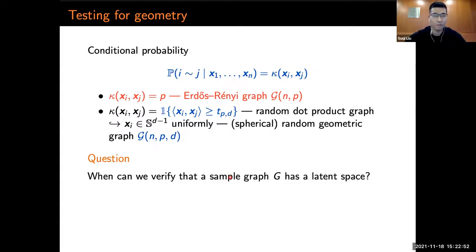We can answer this question by formalizing it as the following hypothesis testing problem. For a given sample G, the null hypothesis is G is a sample from G(n,p). The alternative is G is a sample from G(n,p,d).